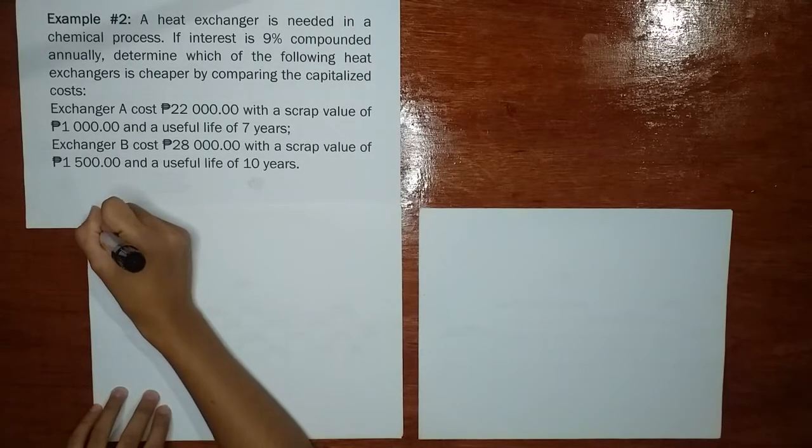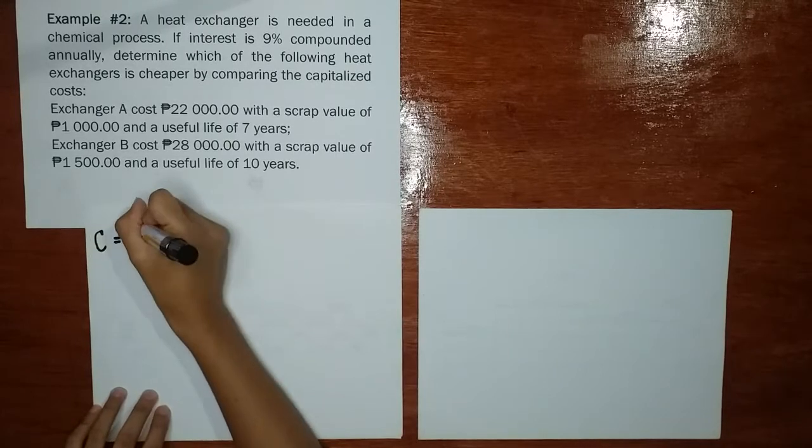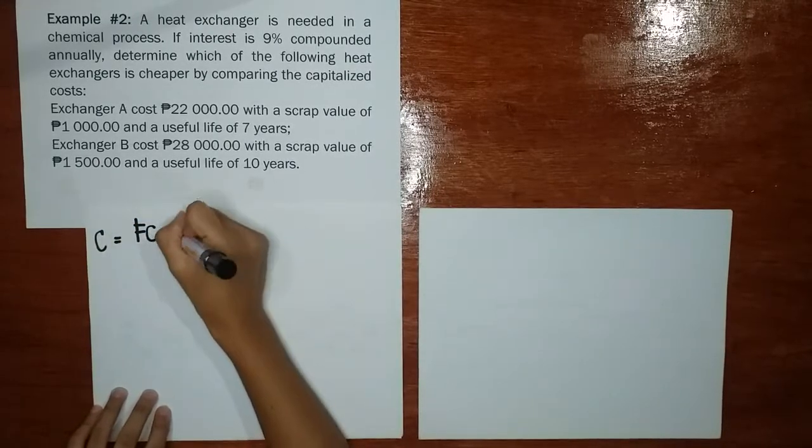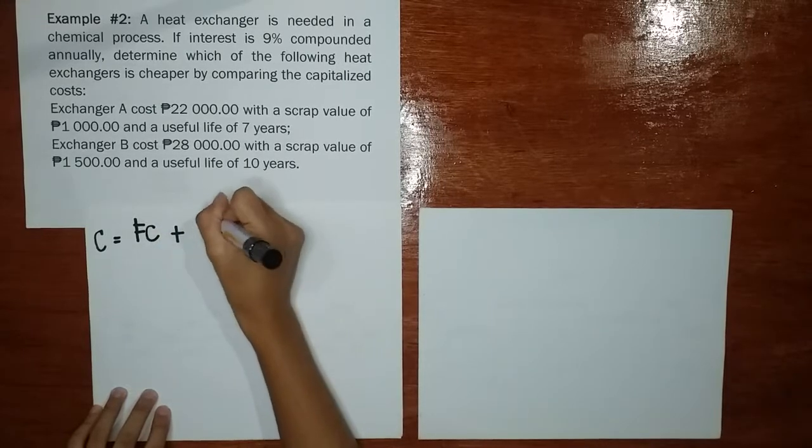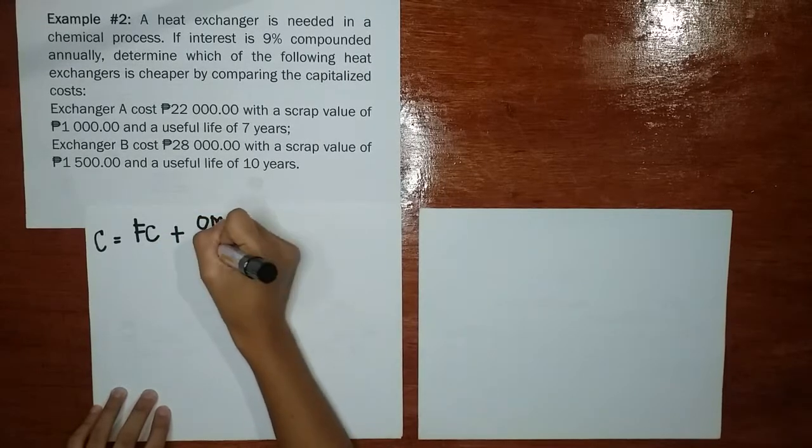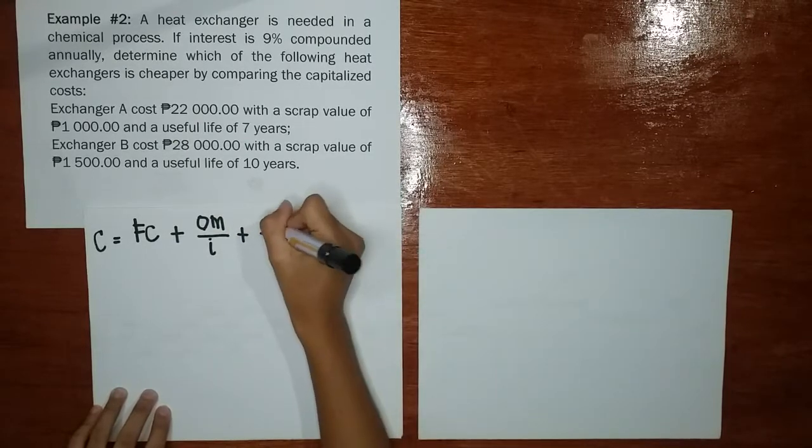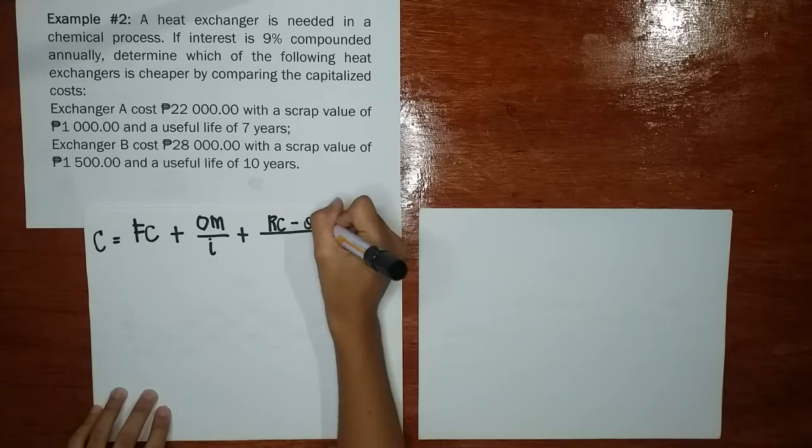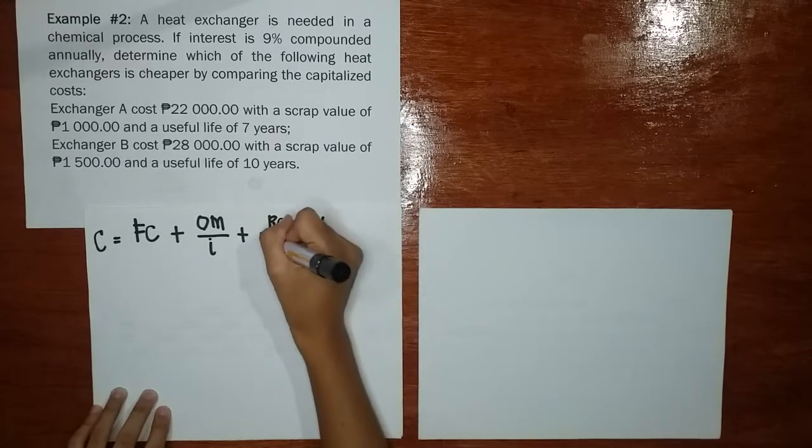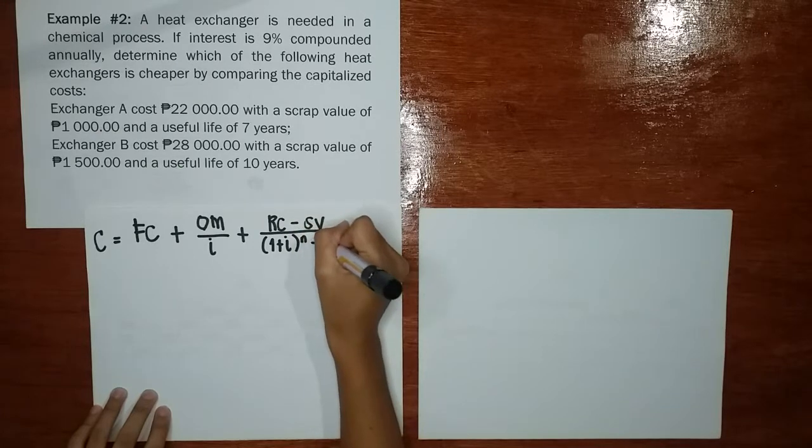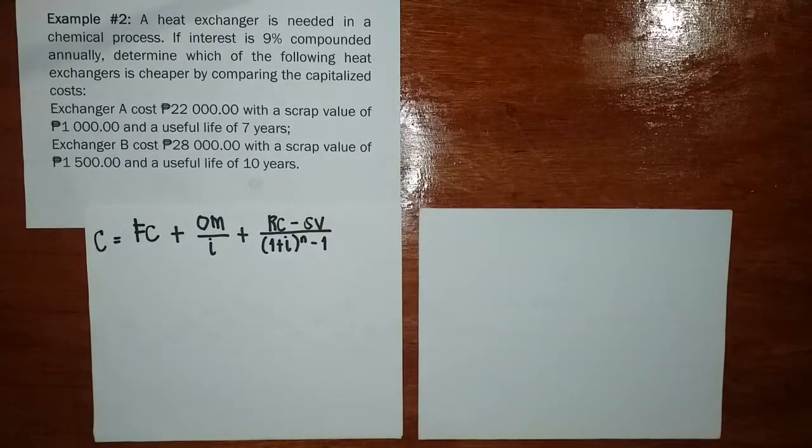which is equal to: Capitalized cost equals first cost plus OM over I plus RC minus SV all over (1 plus I) raised to N minus 1.